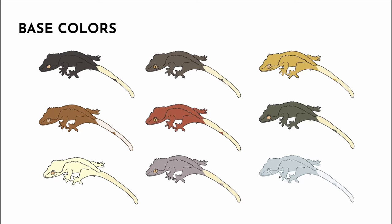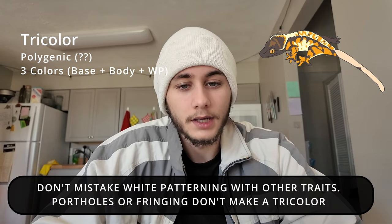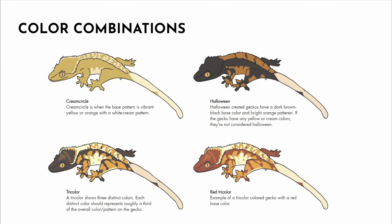Up until now we've covered crested gecko base colors, but crested geckos also have morphs determined by how patterning is expressed. Crested geckos have either white or orange patterning. You can also have tricolors, which are polygenic — this gene makes a crested gecko have three colors, maybe a dark base with yellow and white. You should not confuse the white with portholes or snowflakes, which are different traits. Other color combinations include a red tricolor (red base, orange patterning, and white or cream), the creamsicle (orange or yellow base with white or cream pattern), and the Halloween (a dark base gecko with orange patterning — for example, a harlequin with dark base and orange patterning).